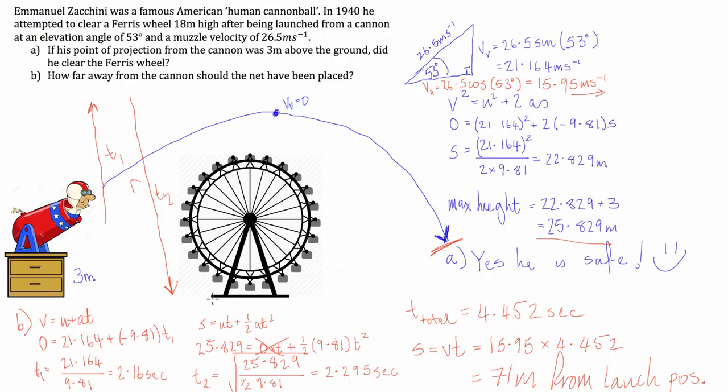There you go, it's a pretty stock standard exam style parabolic motion question. The things you have to remember: the velocity in the vertical changes, the velocity in the horizontal is always the same. Once you've got that, if you can do some trigonometry and algebra, you're pretty much right. I hope that helped, and I'll see you next time.